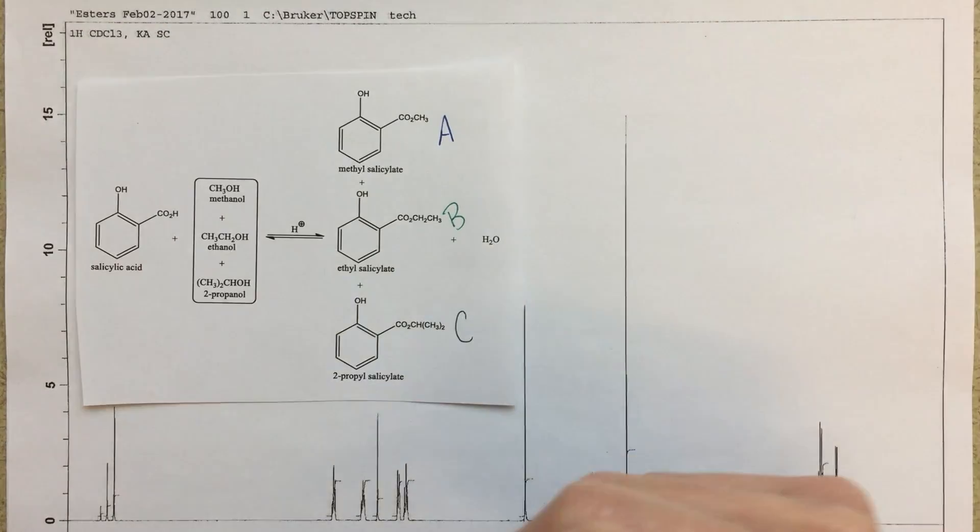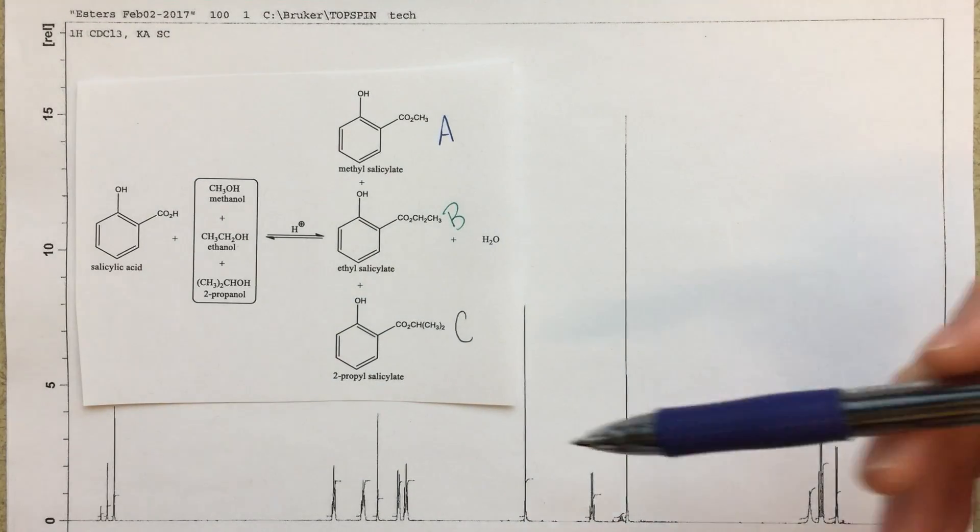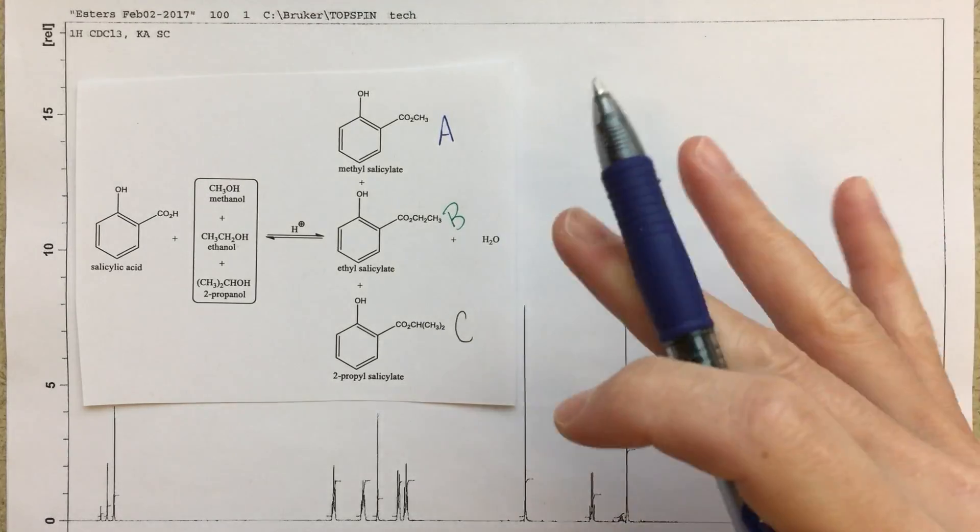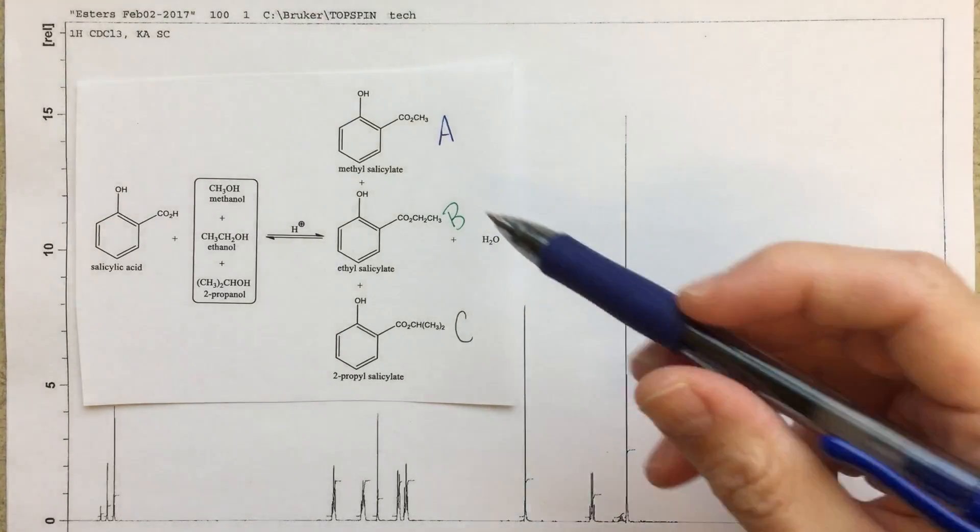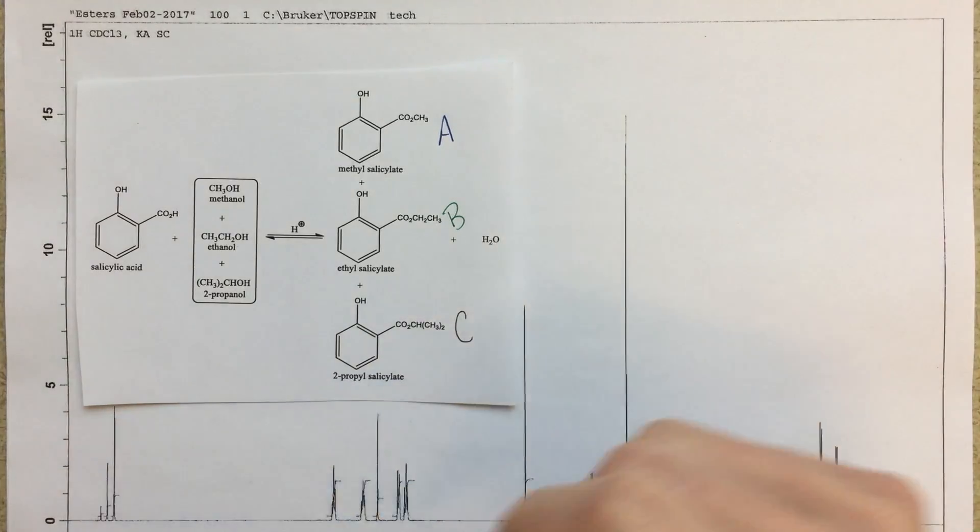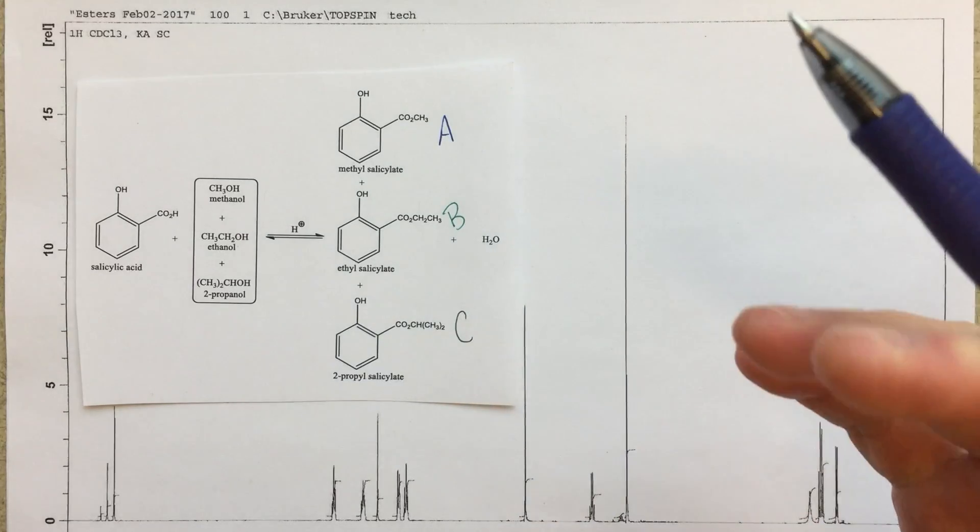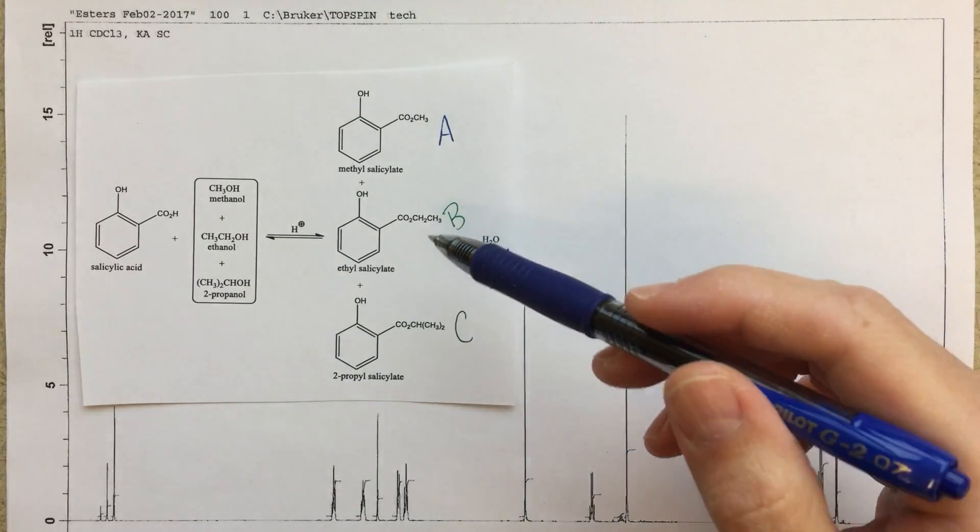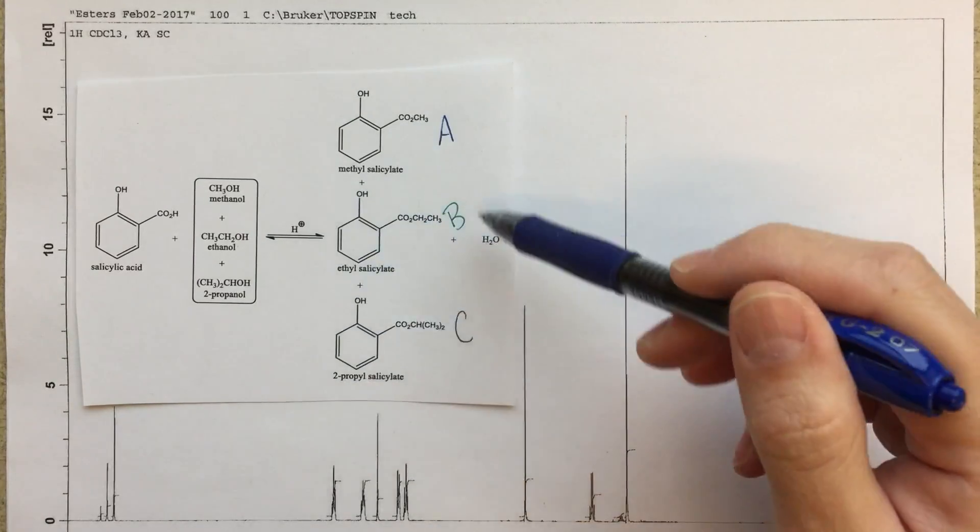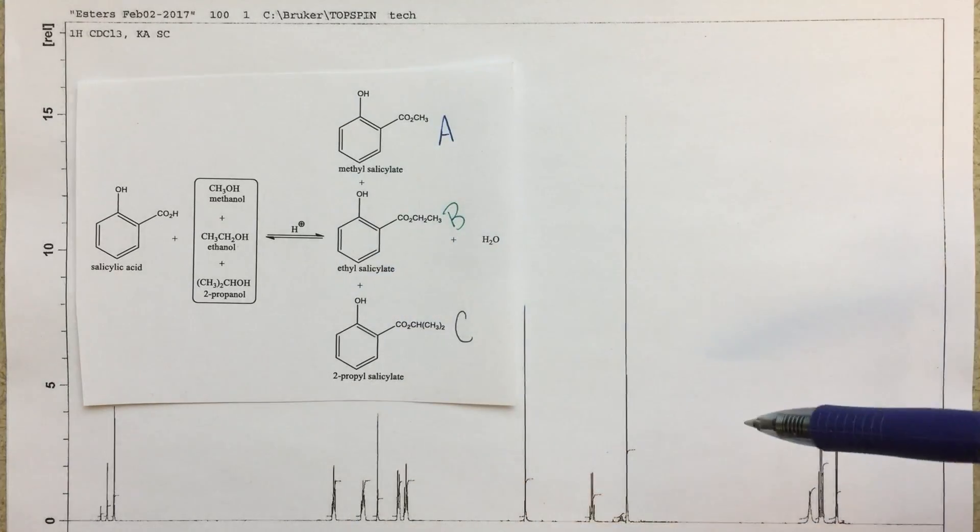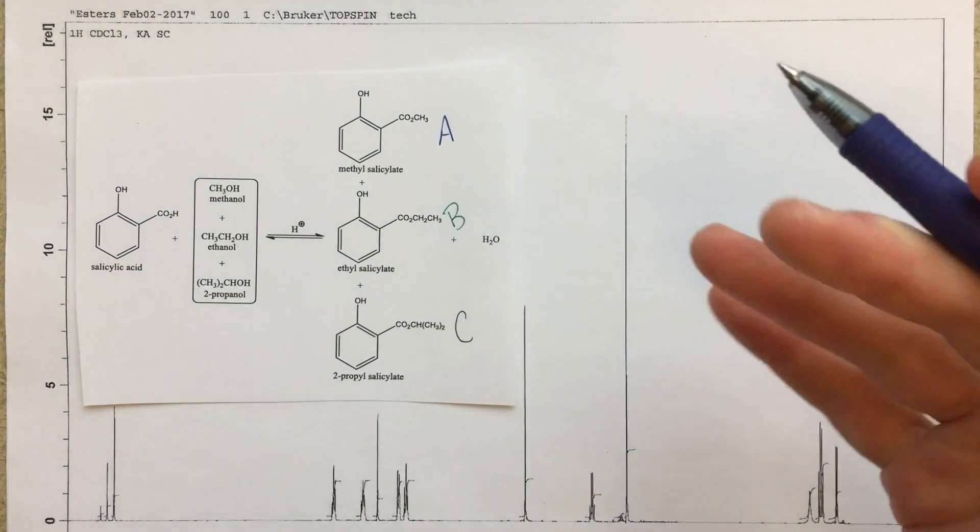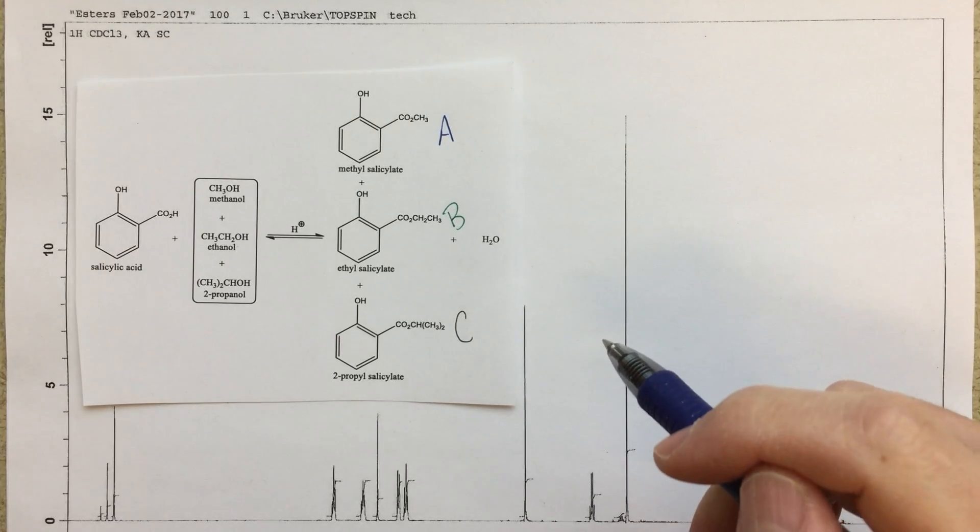This NMR is supposed to be a mixture of all three of these products. There's also going to be some other peaks in here that we'll identify, but we're going to have to identify as best as we can what these different products are. You'll have to excuse me, I've got a little bit of a cold right now. So we're going to identify these products and what percentages they were formed in, so relative percentages to one another.